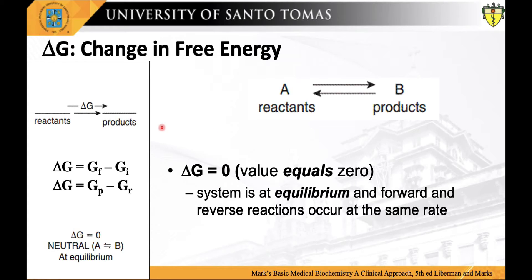When the free energy level of both the products and the reactants are equal, the change in free energy, or delta G, will be zero — the reaction system has achieved equilibrium. When a system is at equilibrium, the rate of product formation exactly equals the rate at which product is converted back to the reactants. Thus, there is no net change in the concentration of reactants and products, and a steady state is achieved. The energy change as the system moves from its initial state to equilibrium is given by the free energy change, or delta G.